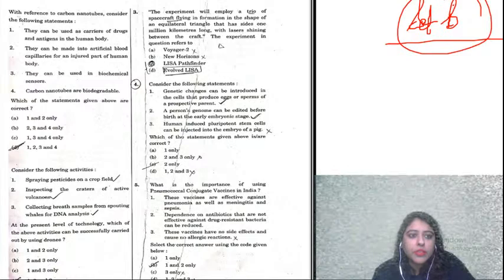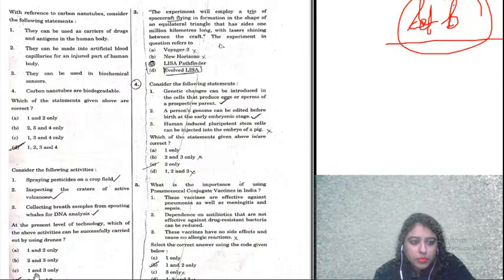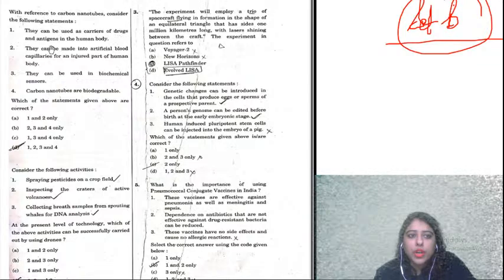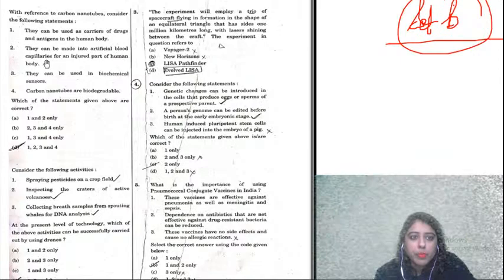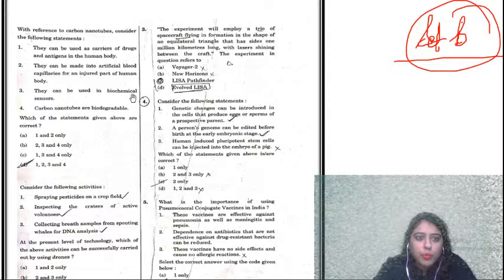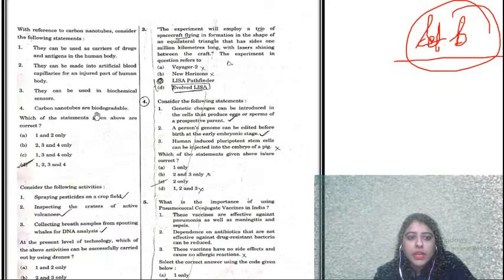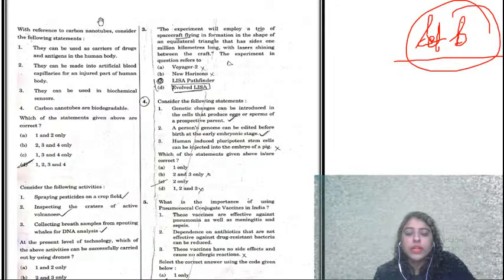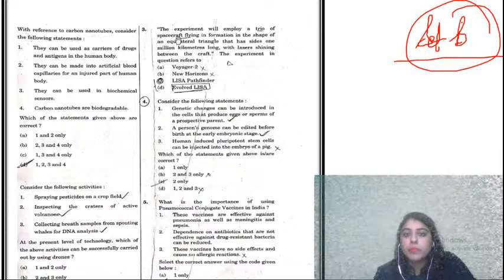I am going to solve the live paper in front of you today. The first question is with reference to carbon nanotubes — consider the following statements: they can be used as carriers of drugs and antigens in the human body; they can be made into artificial blood capillaries for an injured part of the human body; they can be used in biochemical sensors; and carbon nanotubes are biodegradable. This is a science and tech question.